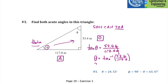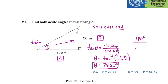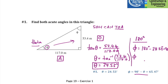To two decimal places, the answer is 24.53 degrees. You could solve for phi using a trig ratio, but you should always take advantage of the 180-degree rule. All angles in a triangle add up to 180 degrees. So phi equals 180 minus 24.53 minus 90, which you can streamline as 90 minus 24.53, giving 65.47 degrees. Make sure you present your answer nicely.